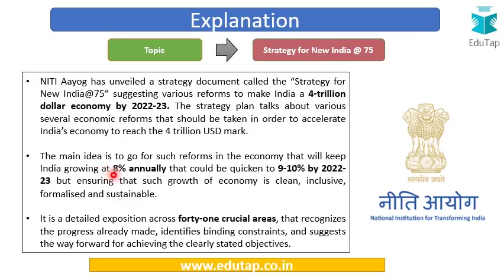At the same time it is important that growth of the economy remains clean — it should not be boosted by black money — it should be inclusive, taking all sections of society into account, it should be formalized rather than informal, and it should be sustainable for future periods as well. This particular strategy document is a detailed exposition containing 41 crucial areas. It recognizes the progress already made, identifies constraints to overcome, and suggests the way forward for achieving the stated objectives.